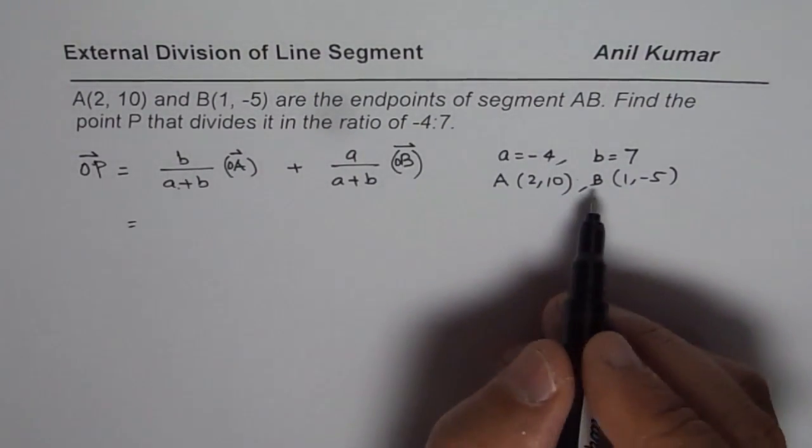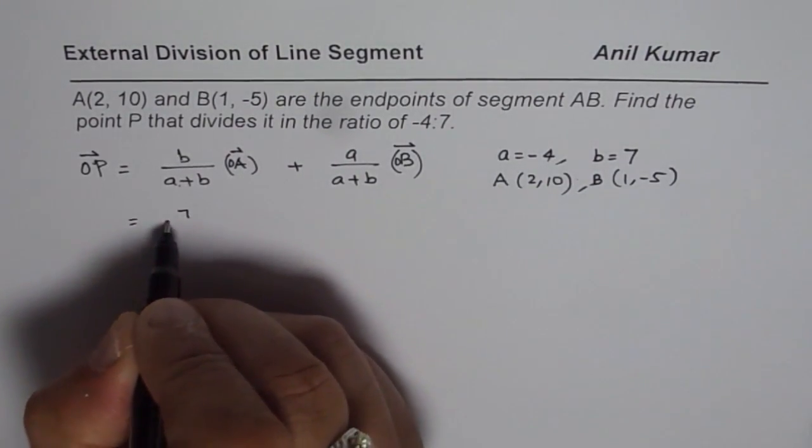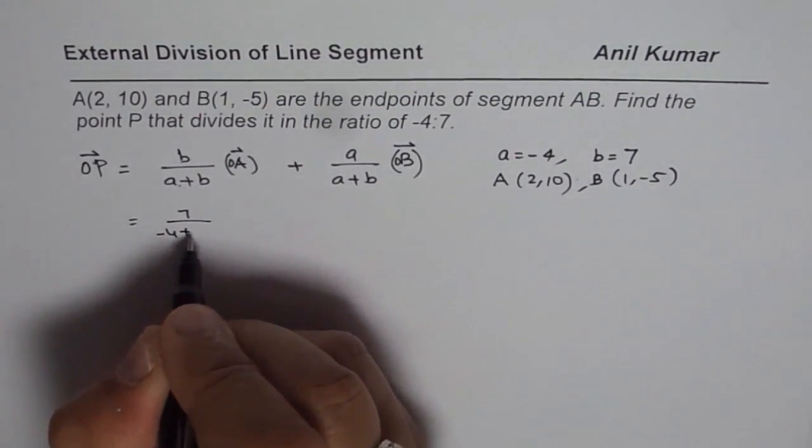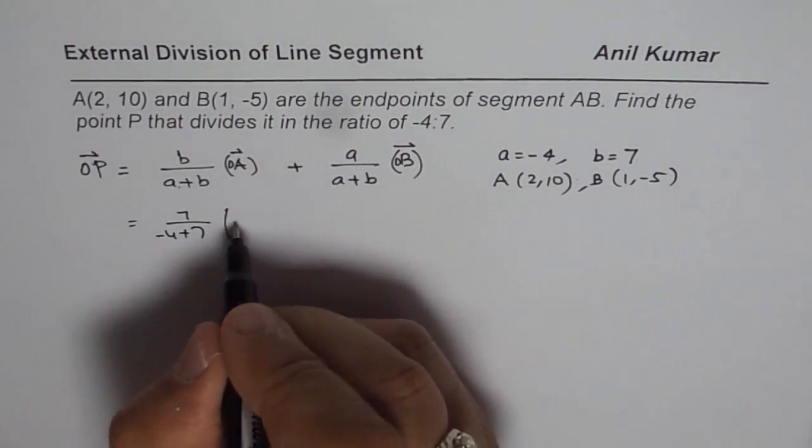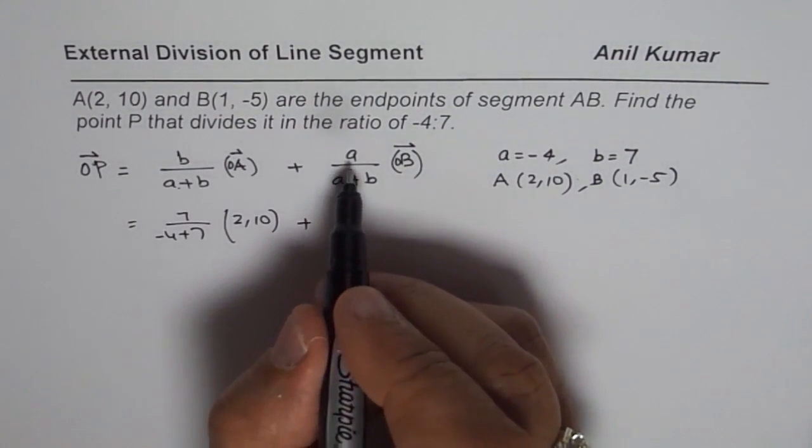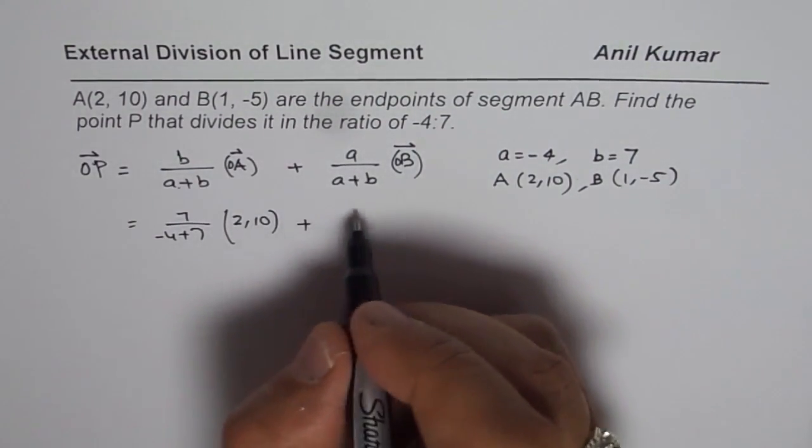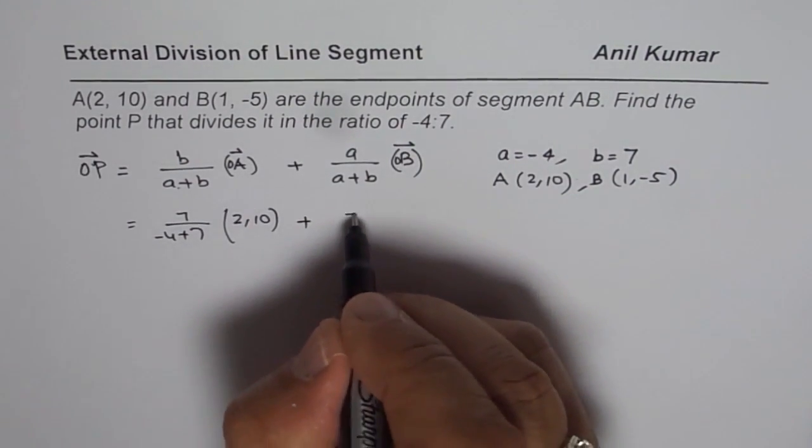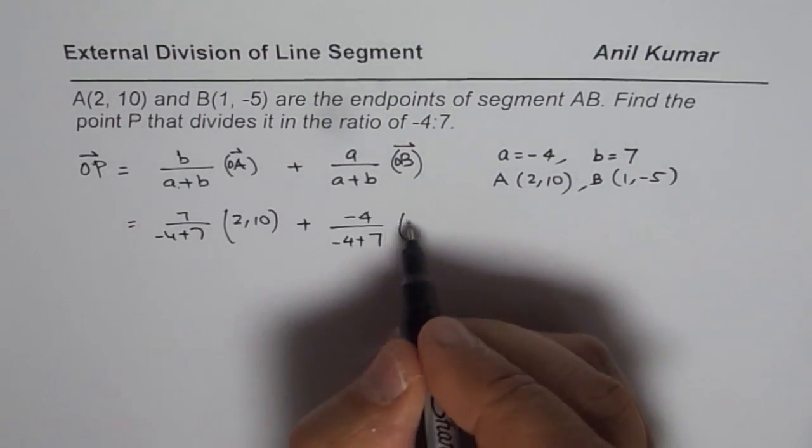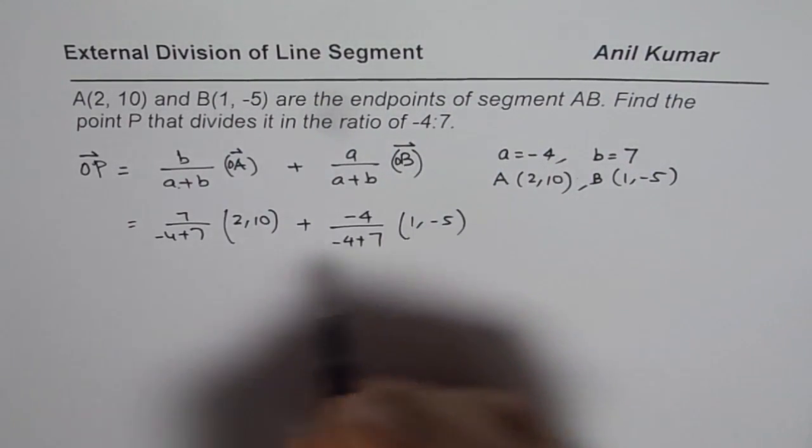Now so B is 7. So we will write 7 over -4 plus 7 times coordinate points of A which is 2,10. Plus here we get A, the ratio A, the first part which is -4 over -4 plus 7, and coordinate points for B is 1,-5.